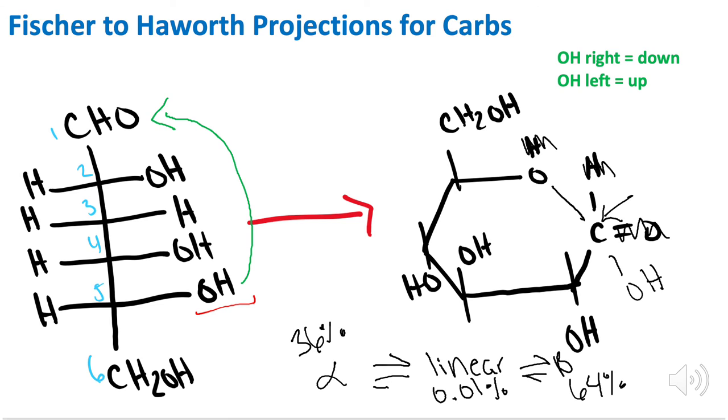And that is essentially everything that we need to know about converting between Fischer and Haworth projections. We always start off with labeling our carbons, figuring out the one that's furthest away, the OH group that is furthest away, and that is going to attack our carbonyl, and we're going to get the alpha and beta molecules.